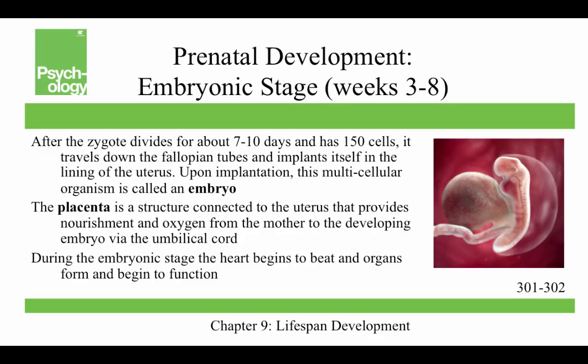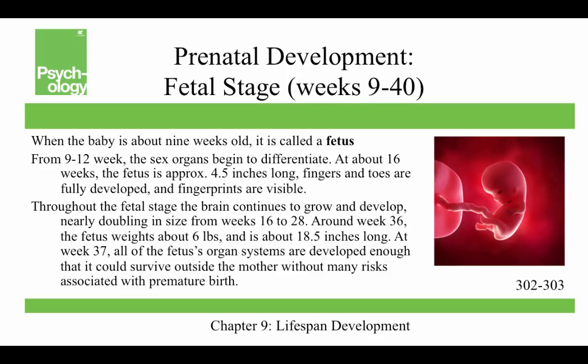The placenta provides nourishment and oxygen from the mother to the developing embryo via the umbilical cord. During this stage the heart begins to beat, organs form and begin to function, and the neural tube forms along the back of the embryo, developing into the brain and spinal cord. At about nine weeks the baby is called a fetus. Between nine and 12 weeks, sex organs begin to differentiate. At 16 weeks the fetus is about four and a half inches long with fully developed fingers and fingerprints.